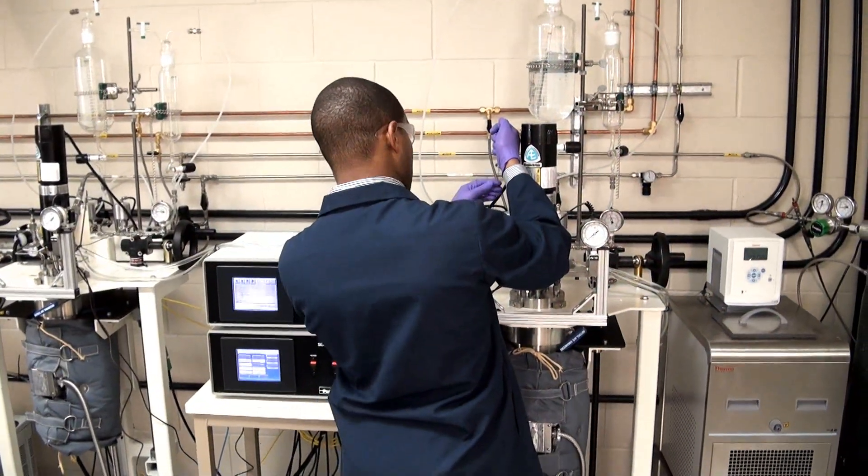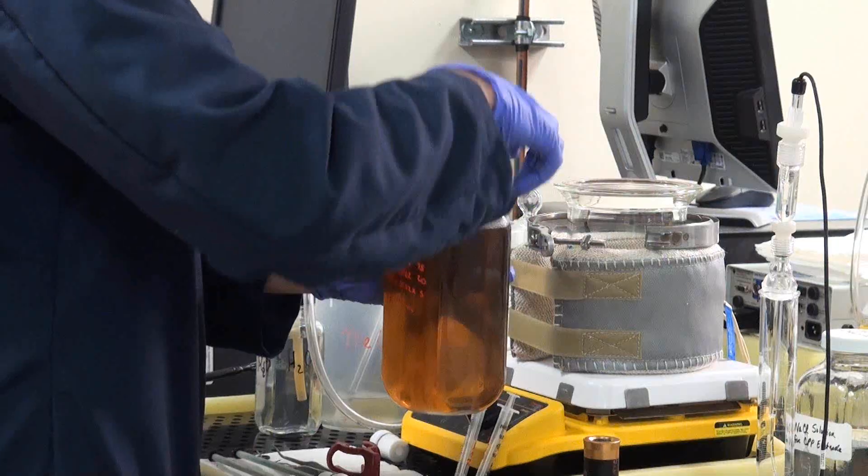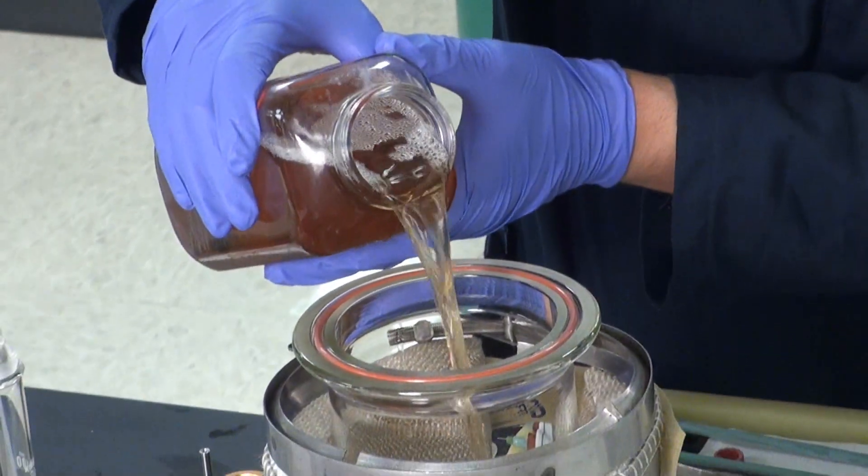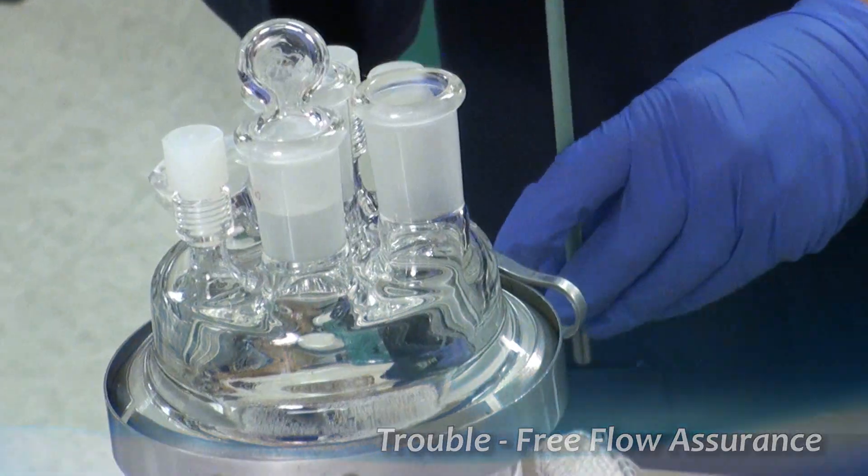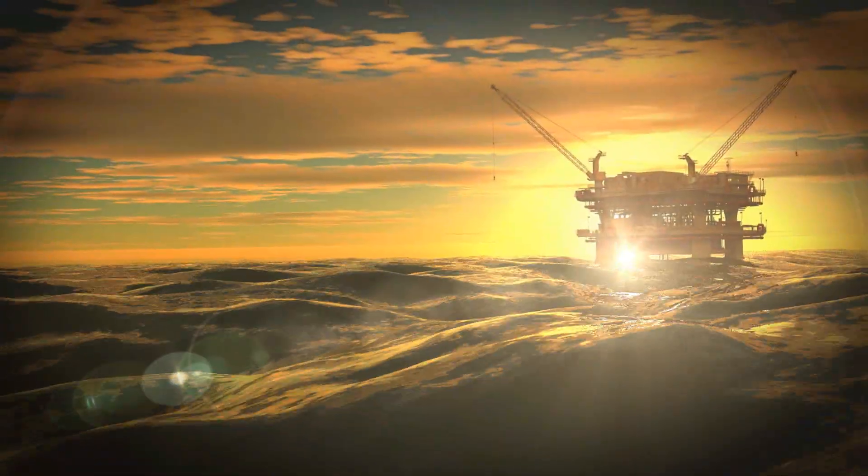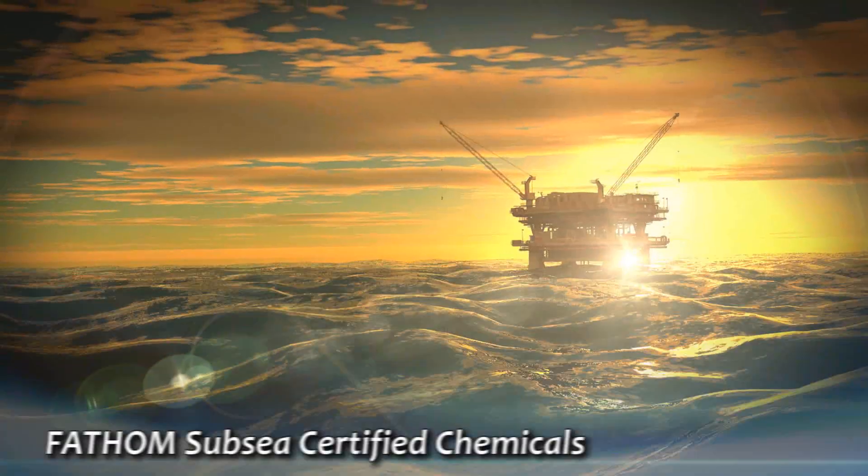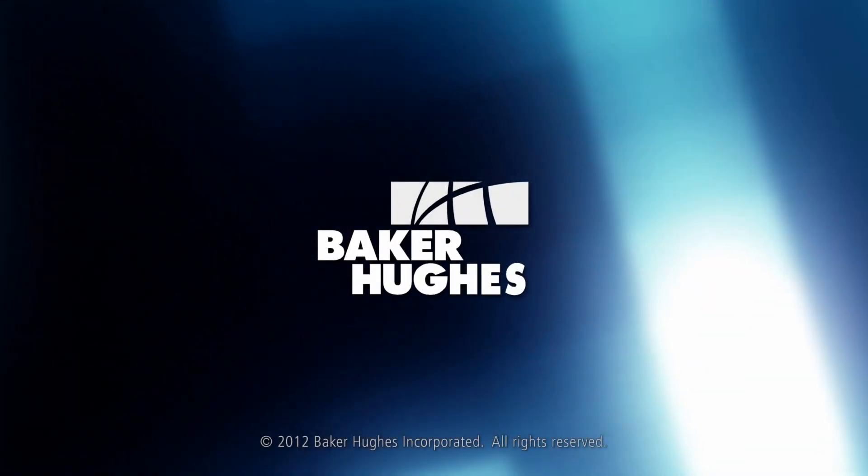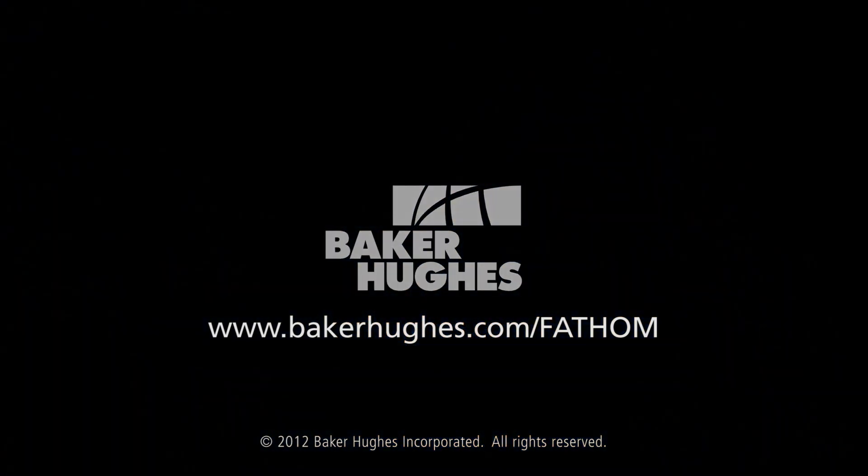The rigorous qualification process employed by Baker Hughes for certifying Fathom subsea chemicals means that you can rely on our subsea products to deliver reliable, trouble-free performance for mitigating flow assurance and asset integrity challenges in virtually any deep water or ultra deep water production environment. For more information about Fathom subsea certified chemicals contact Baker Hughes at www.bakerhughes.com/Fathom.